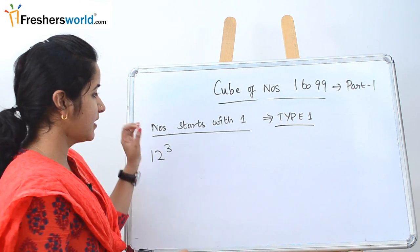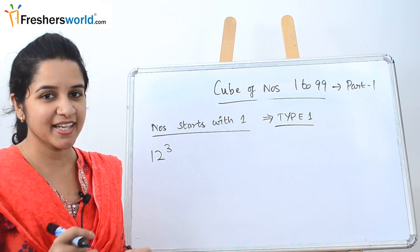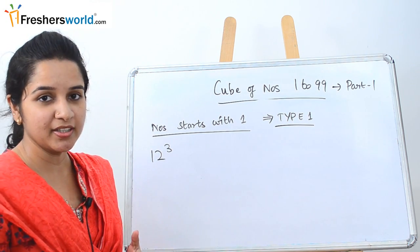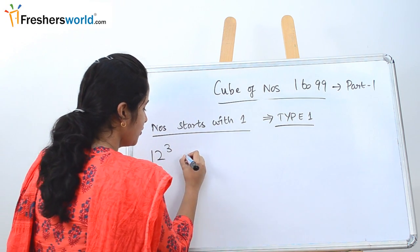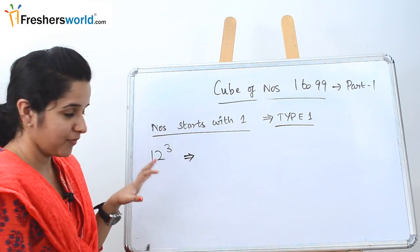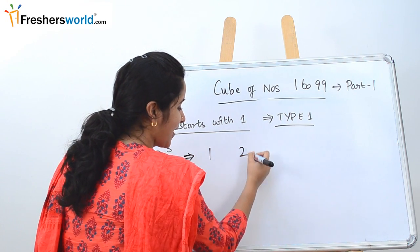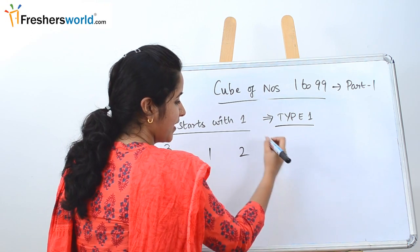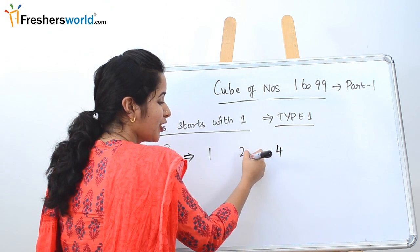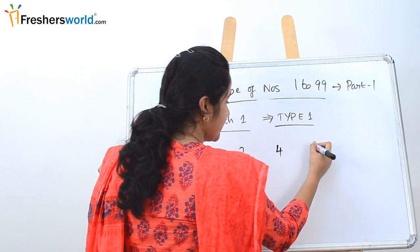The first type is numbers that start with 1. Let's take an example - say we want to find 12 cube. So how we are going to write it: first write the first 2 digits as such. Now square the second digit: 2 square is 4. Now make the cube of the second digit: 2 cube is 8.